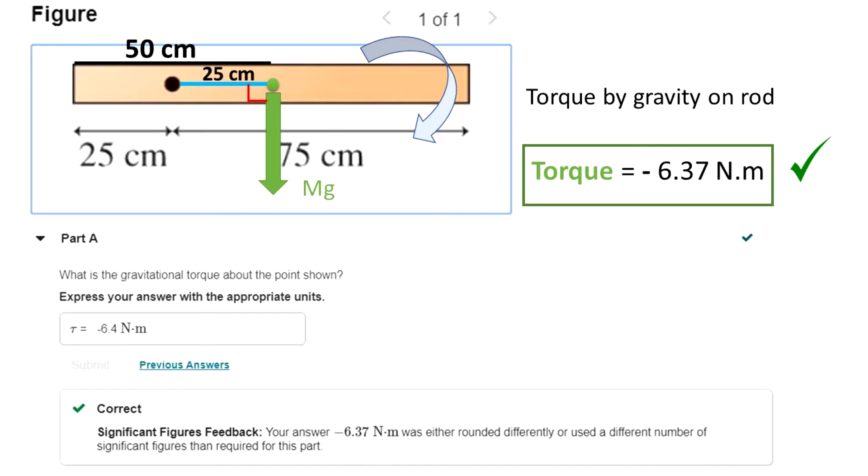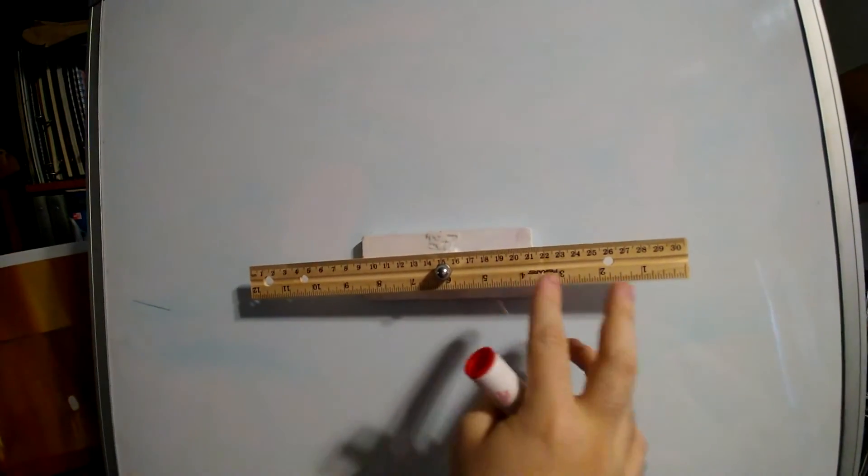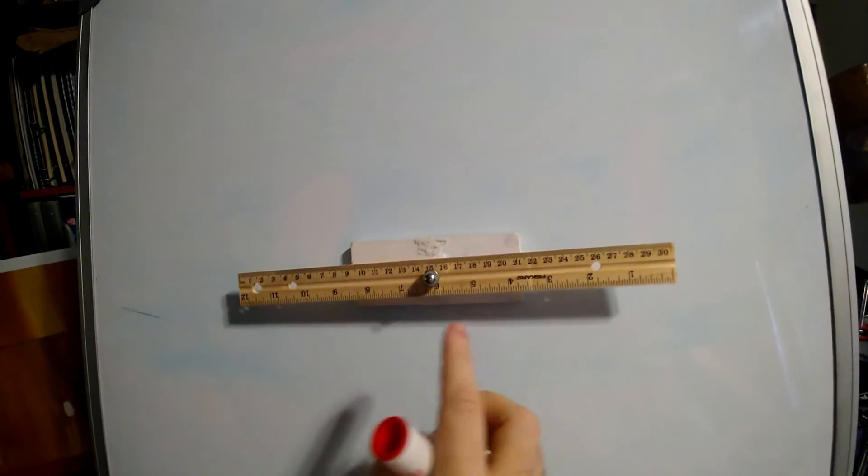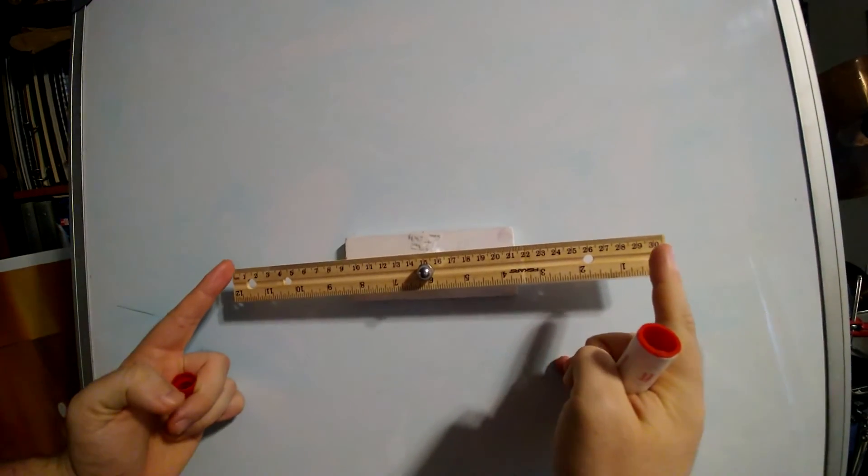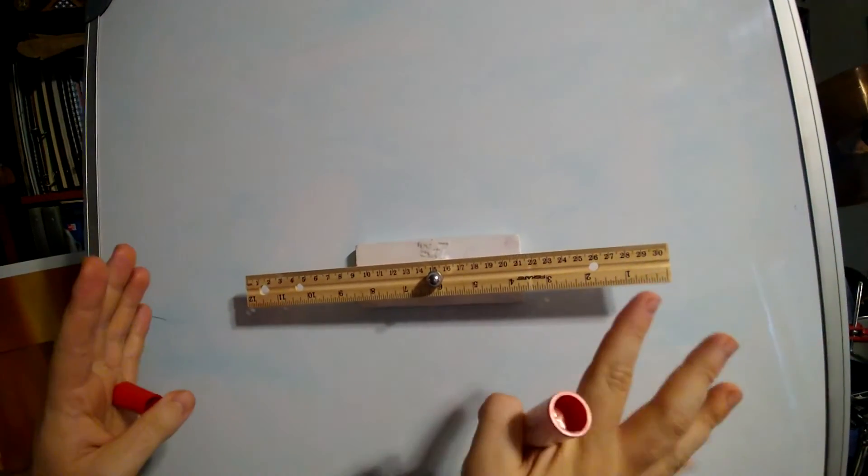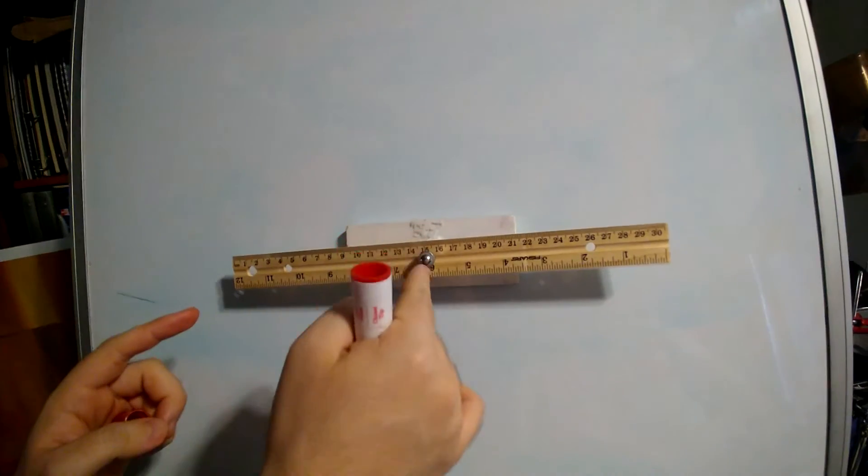Now I want to show you a brief demonstration about how torque looks in real life. So we see that the mass in this rod is uniformly distributed. It has 30 cm of length, in this case, just an example. And 15 cm is the center.